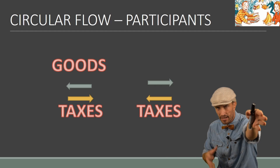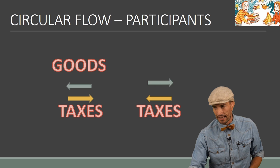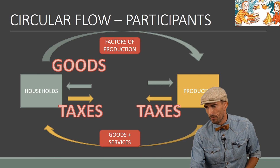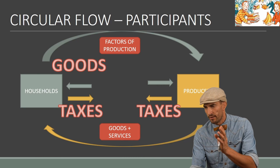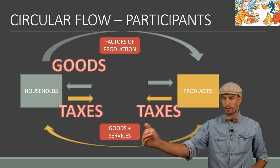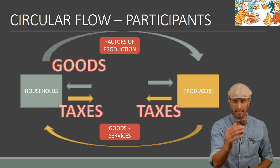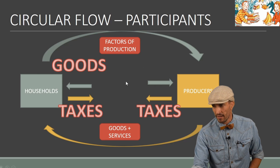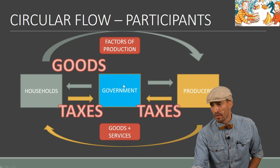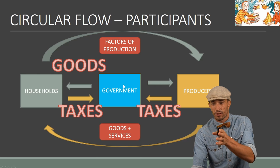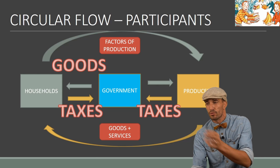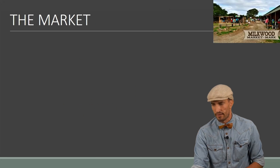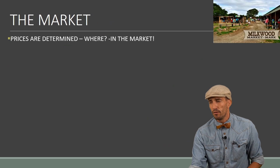You can see it's like Newton's law — for every action there is an equal and opposite reaction. Households give factors of production to producers and get goods and services in return. The government provides goods and services to households and producers, in return for taxes.